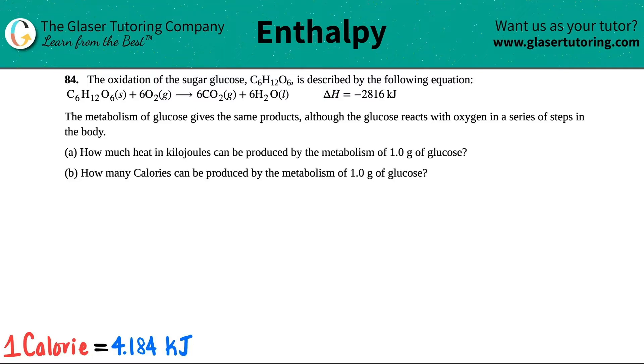The metabolism of glucose gives the same products, although the glucose reacts with oxygen in a series of steps in the body. So letter A, how much heat in kilojoules can be produced by the metabolism of one gram of glucose?